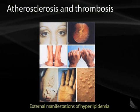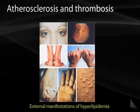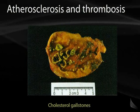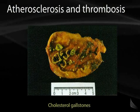Patients that have hyperlipidemia often show effects in their bodies. You can see retinal lipid deposits, periorbital lipid deposits, as well as skin lesions called xanthomas. You can see tendon xanthomas in the Achilles tendon. Patients with high cholesterol are also more likely to develop cholesterol gallstones.